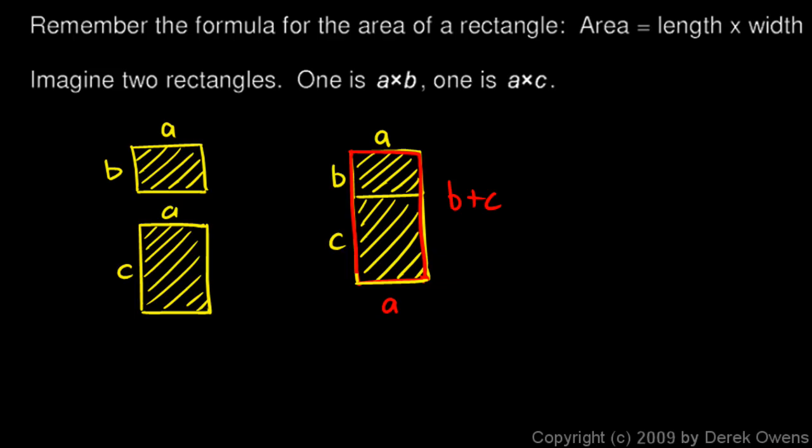So if we put them together to form a single rectangle, we can call this one rectangle here a rectangle of width A across this way, and a length this way, B plus C. So the total area here is going to have to be A times B plus C. In other words, the width times the length. The total area has to be the same here and here. So we can say that these two areas, AB plus this area AC, has to equal this area, A times B plus C. And that is the distributive property.